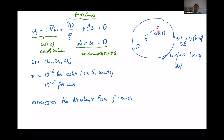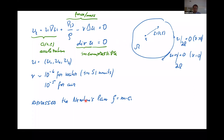At the boundary one imposes the condition that u is zero if the viscosity is positive, and if the viscosity nu is zero then one just imposes that the normal component is zero. The equation expresses Newton's law: force is mass times acceleration. This term is the acceleration, and these terms represent force divided by mass — the forces due to incompressibility in the fluid.